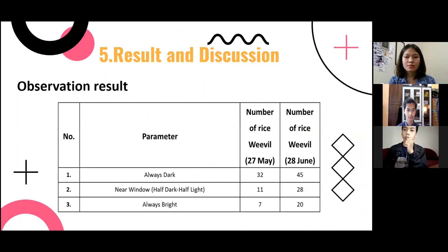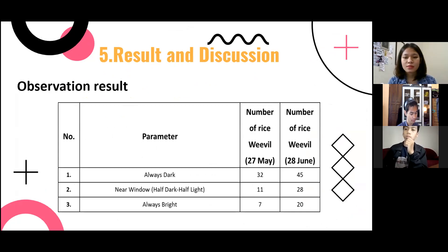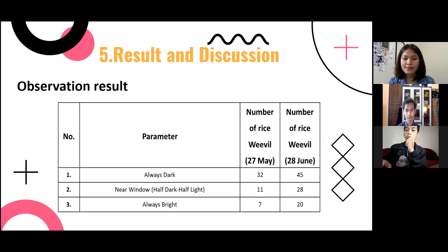This is the result and discussion. The table of observational results has three parameters: always dark, near window (half dark, half light), and always bright. The number of rice weevils counted on 27 May was 32 in always dark, 11 near window, and 7 always bright. This increased by 28 June to 245 in always dark, 28 in near window, and 20 in always bright.